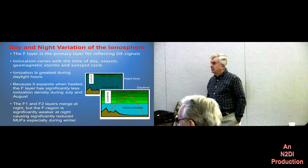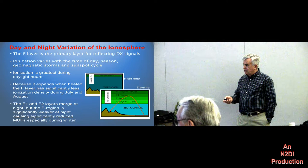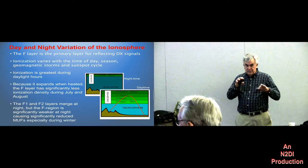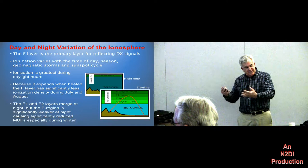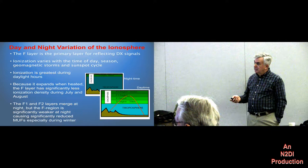Electron density varies with time of day, season, geomagnetic storm, and the sunspot cycle. Ionization and electron density track each other — the more ionization there is, the more electrons have been stripped off those atoms, so the more free electrons there are.